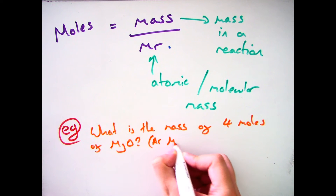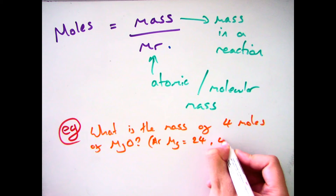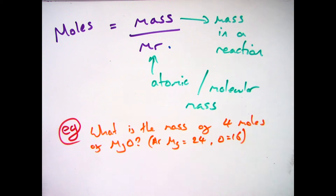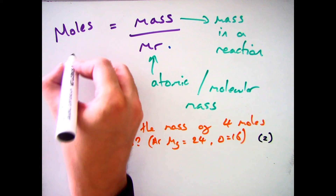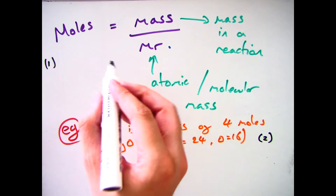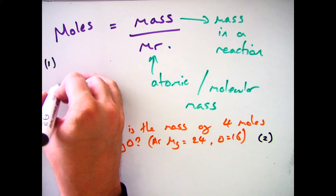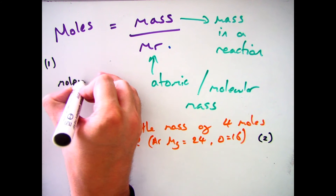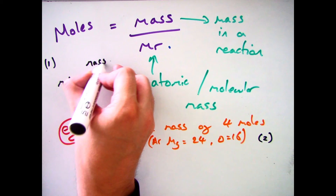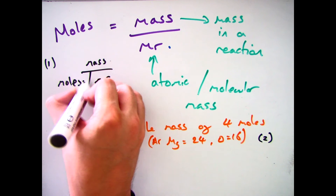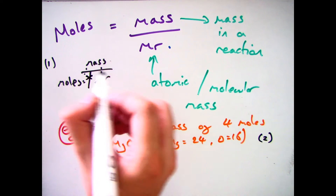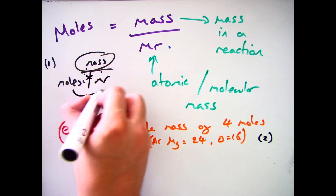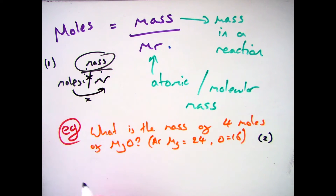You will also be expected to rearrange that equation. If you had a question that said 'what is the mass of 4 moles of MgO?', where the atomic masses are magnesium 24 and oxygen 16, you need to rearrange it — and this could be worth two marks. Mass equals moles multiplied by Mr. You can work that out by putting it into a triangle: moles = mass divided by Mr, therefore mass = moles multiplied by the relative formula mass.